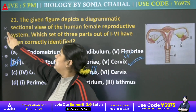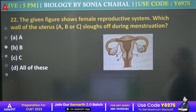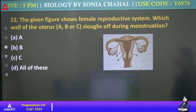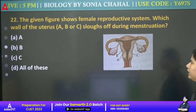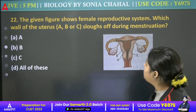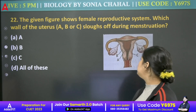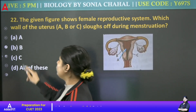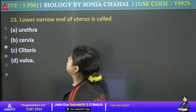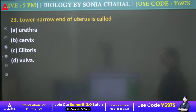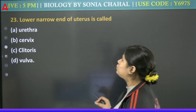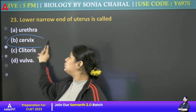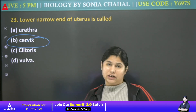Moving ahead: The given figure shows female reproductive system. Which wall — A, B, or C — sloughs off during menstruation? The innermost layer is A, that is endometrium, and this is the one that goes — the rest do not. Lower narrow end of uterus is called cervix — that is called cervix.